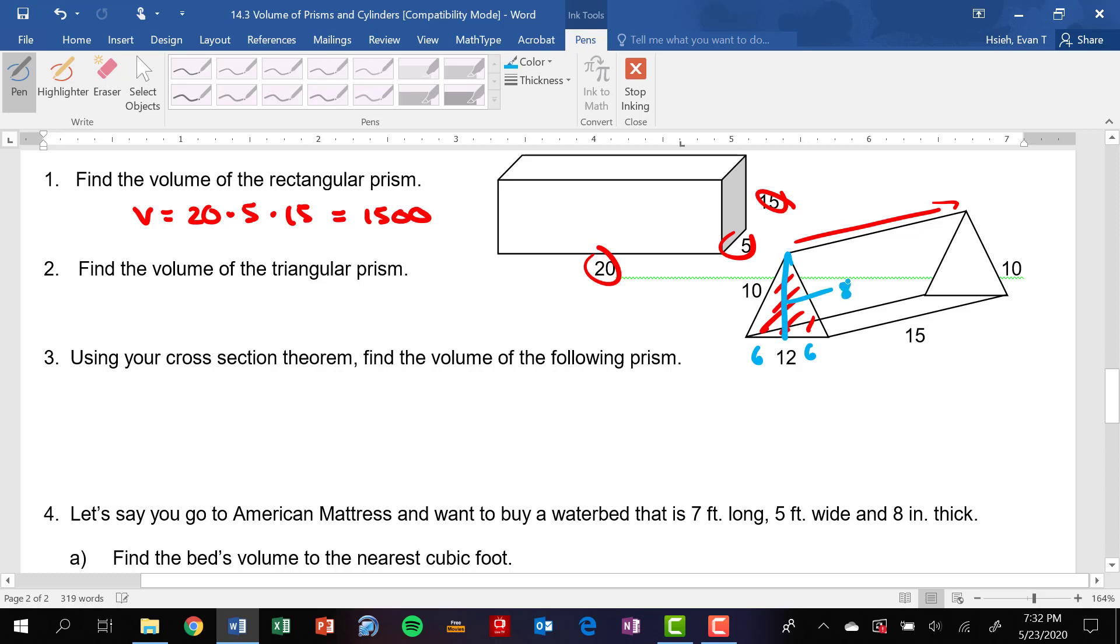And that means that the height is going to be eight there. So now the area of the base is going to be equal to one-half of the base of that triangle, which is 12, times the height, which is eight, that'll be 48. And then multiply that times its height, which is 15. And so that'll be the answer for that one. So I think that's going to come up to 720, I believe.